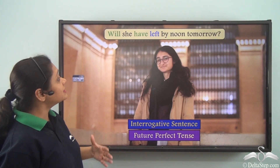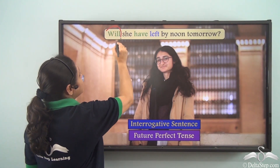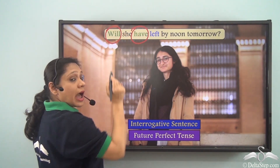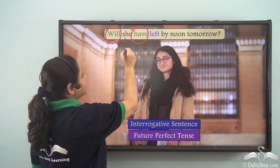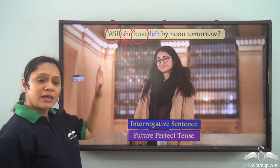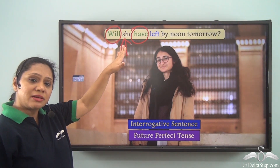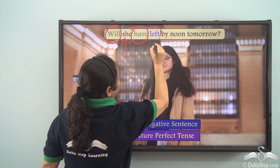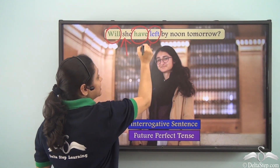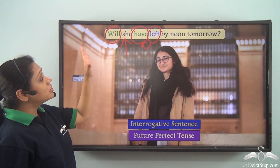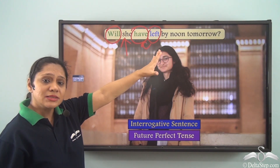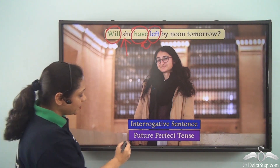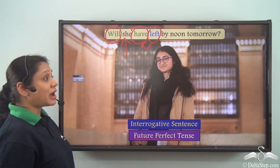Will she have left by noon tomorrow? In this case we have two auxiliary verbs - 'will' and 'have' - and the subject is placed in between these two auxiliary verbs. The main verb follows the second auxiliary verb. So this interrogative sentence is portraying the future perfect tense.